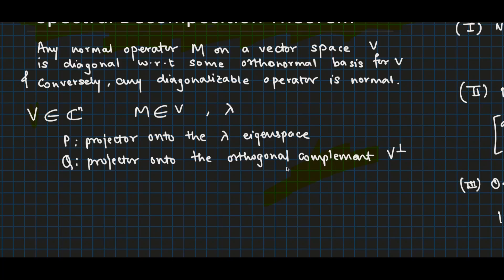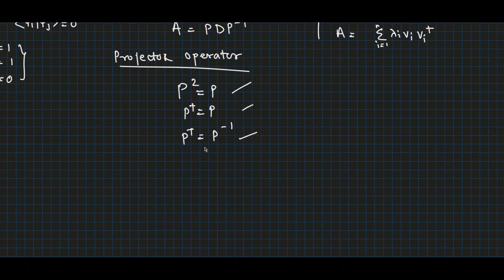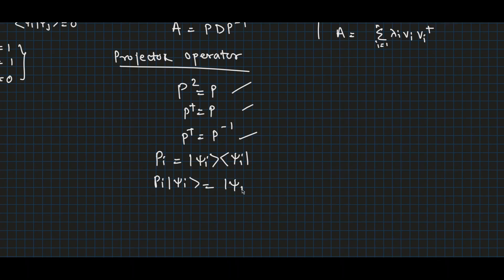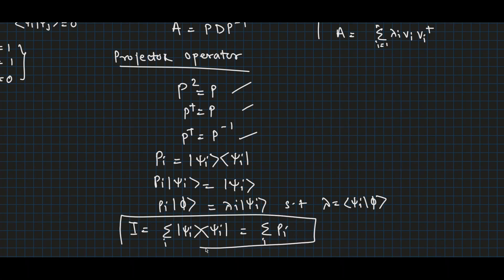A projector or projection operator is a linear operator P that projects a vector onto a subspace, following three properties. In terms of state vectors, we write the projector operator as |psi-i><psi-i| in outer product form, such that P-i operating on |psi-i> gives |psi-i>, and P-i operating on any state |phi> gives lambda-i |psi-i> where lambda-i equals <psi-i|phi>. The identity operator can be written as the summation of all P-i.